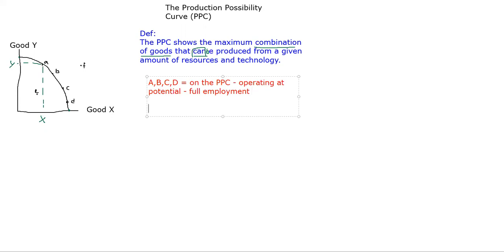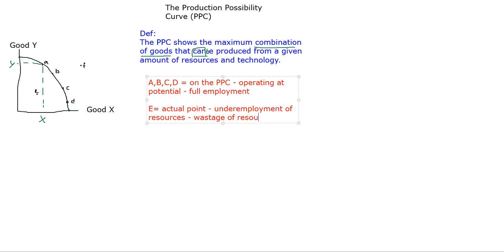In reality, your actual point - denoted by point E - is usually some point inside the PPC. Why? Because there usually exists under-employment of resources. When we talk about full employment and under-employment, we're not just talking about labor, but any particular resource or factor of production - land, labor, capital, and so on. Points within the PPC are where your economy or firm would actually be producing, because perfect efficiency is difficult to achieve in the real world.